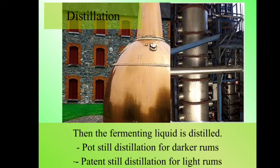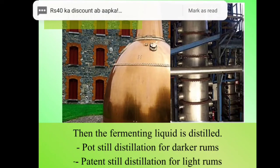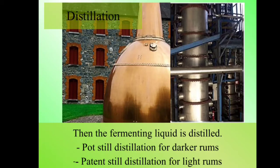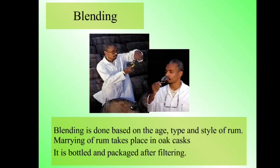The next step is distillation, where the fermenting liquid is distilled. The distillation process is of two types: first is pot still distillation, used for darker rums, and the second is patent still distillation, used for light rums. Blending is then done based on the age, type, and style of rum.